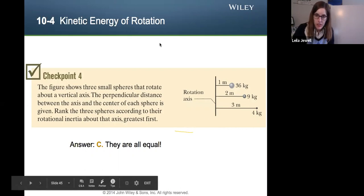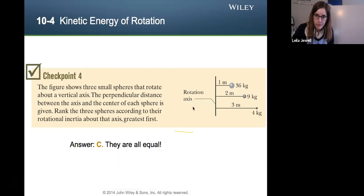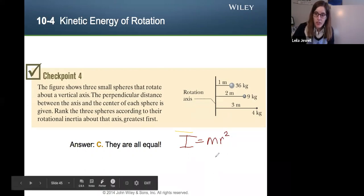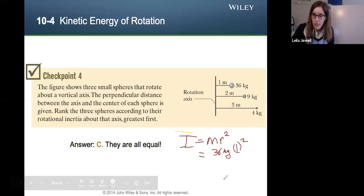We want to calculate the rotational inertia I, then because there's just one particle, we don't even need the summation. It will just be their mass times their distance from the axis of rotation squared. So for the first one, that is a mass of 36 kilograms times a radius of one squared. So it comes out to 36.